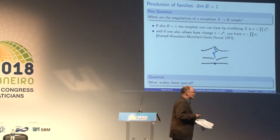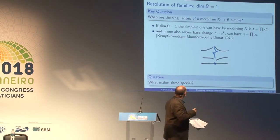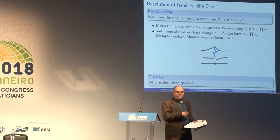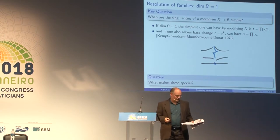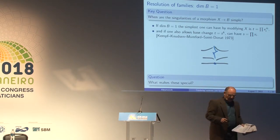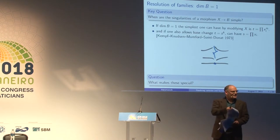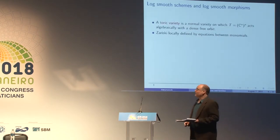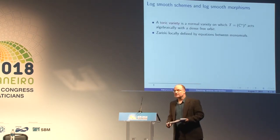What I drew here is the case of a two-dimensional variety mapping to a one-dimensional variety. In the two-dimensional case it's just a product, so s equals x₁ · x₂ near this singular point of the fiber. This is as non-singular as you can get a one-parameter family. And the question I want to ask is: what makes this kind of morphism special? Why are these really the best? My answer is that they are log smooth.